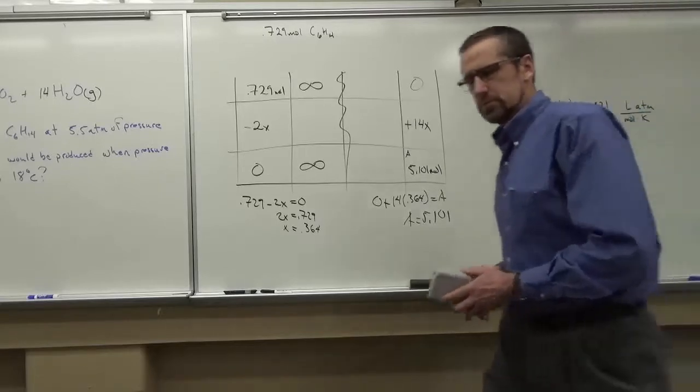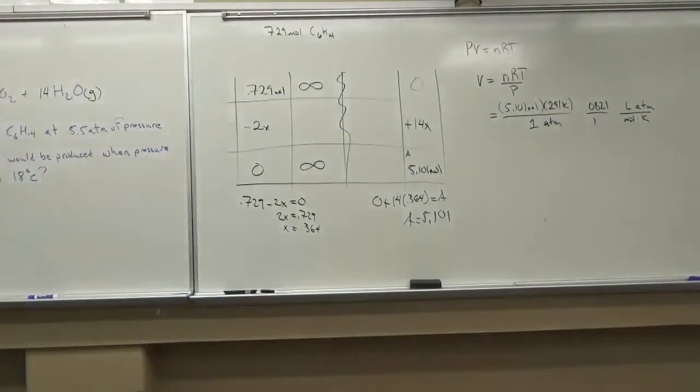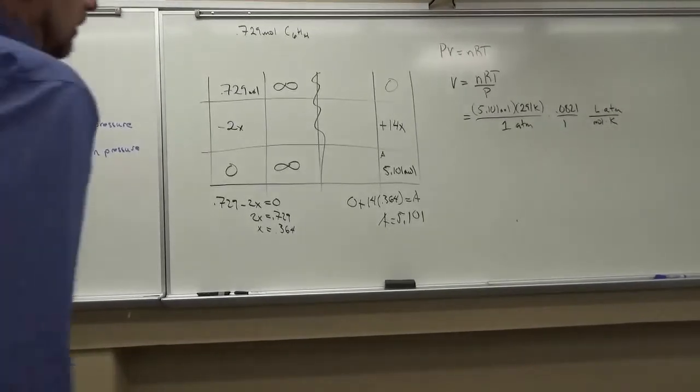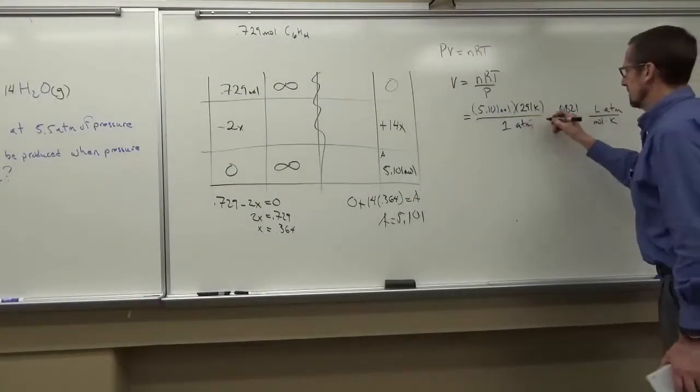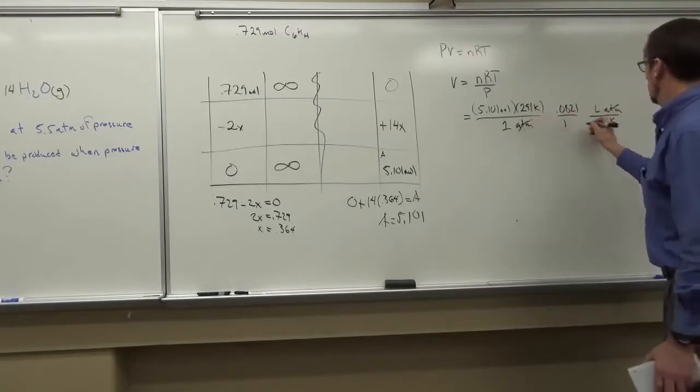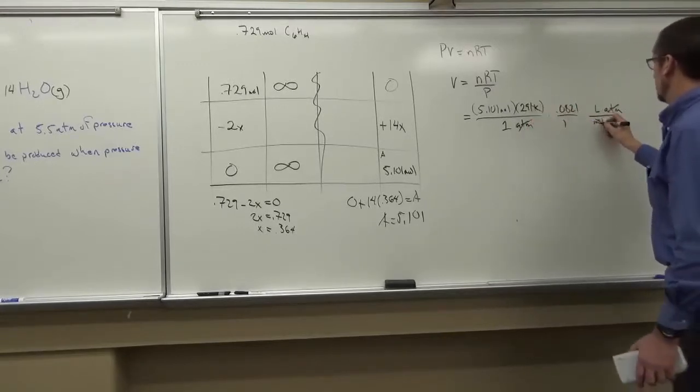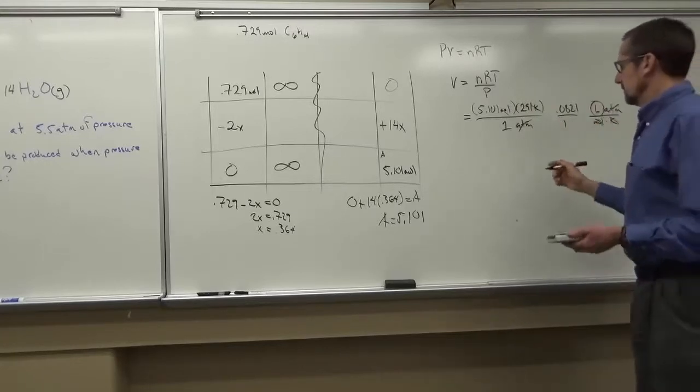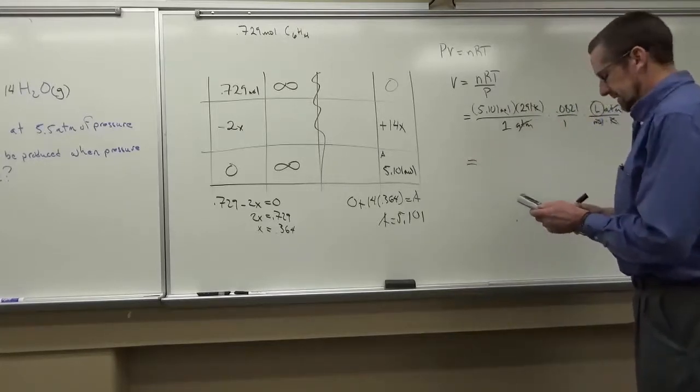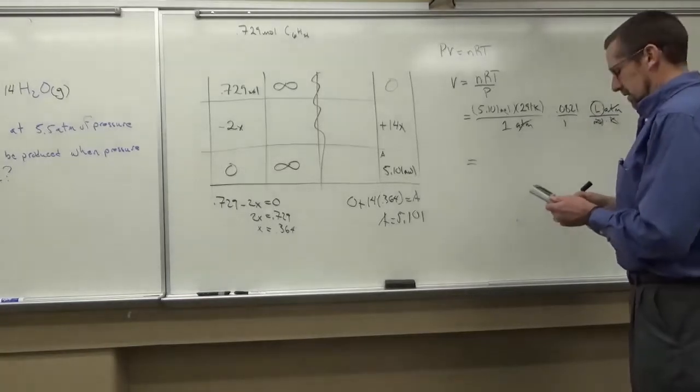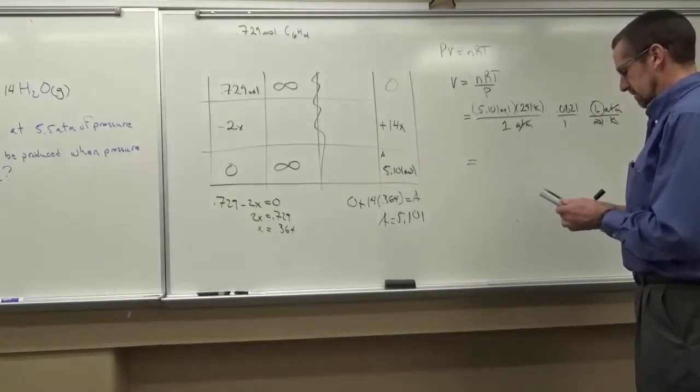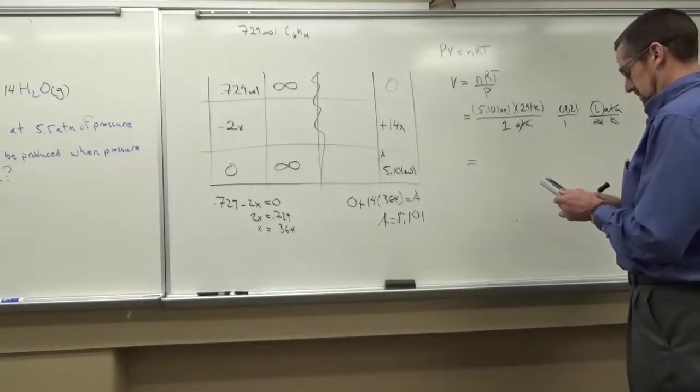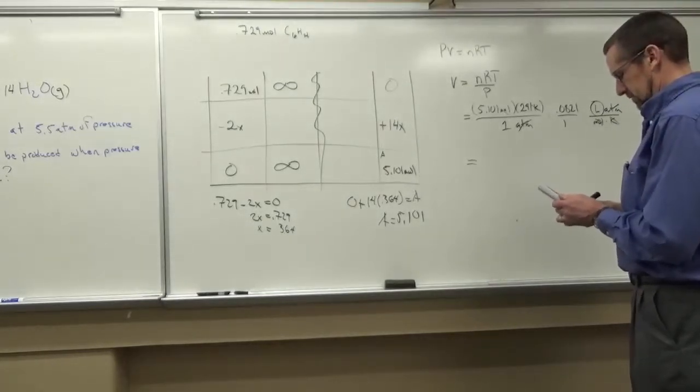So the unit cancellation: atmospheres are going to cancel out. Kelvins going to cancel out. Moles is going to cancel out. We're going to do the arithmetic. So 5 times 291 times 0.0821.